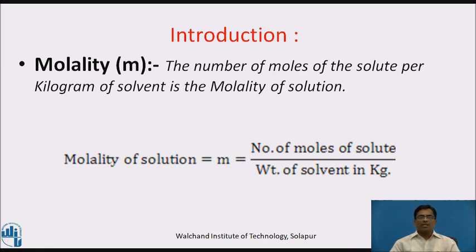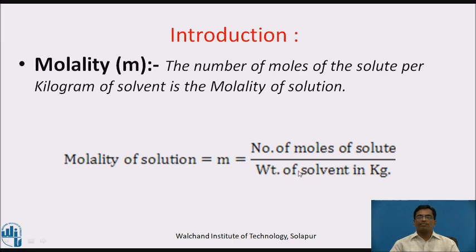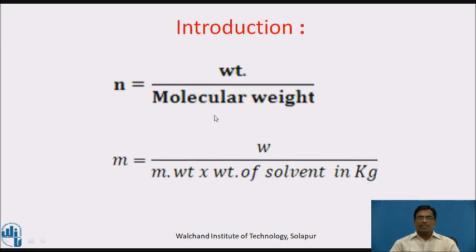Molality is represented by small m. It is defined as the number of moles of the solute per kilogram of solvent. Molality of solution, mathematically, small m is equal to number of moles of solute divided by the weight of solvent in kilograms. Overall, small m (molality) = (weight / molecular weight) × (1 / weight of solvent in kilograms).